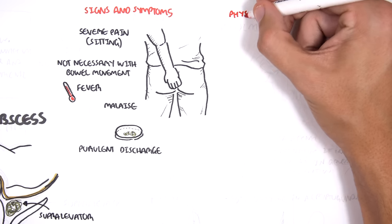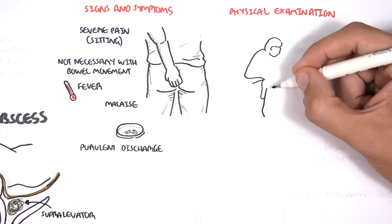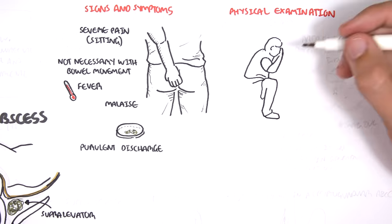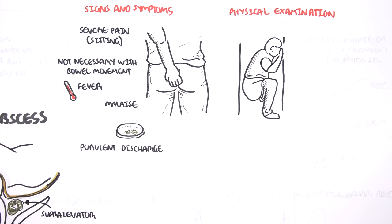Another clinical feature is malaise and purulent discharge. On physical examination, patients should be in a per rectal exam position, which is lying on the side, knees up to chest. This will reveal the anal area.